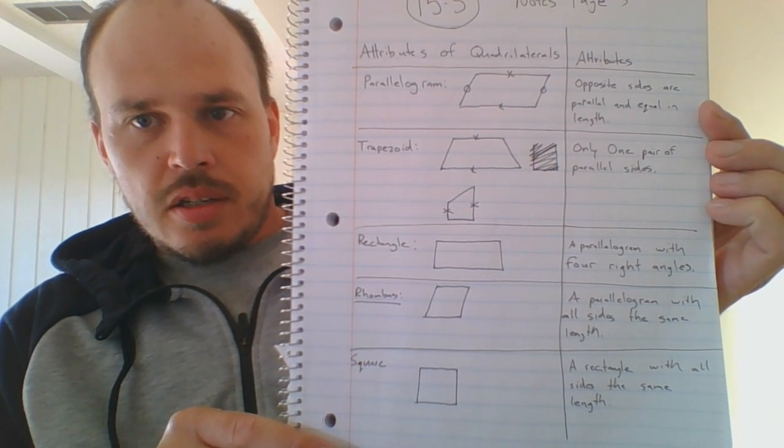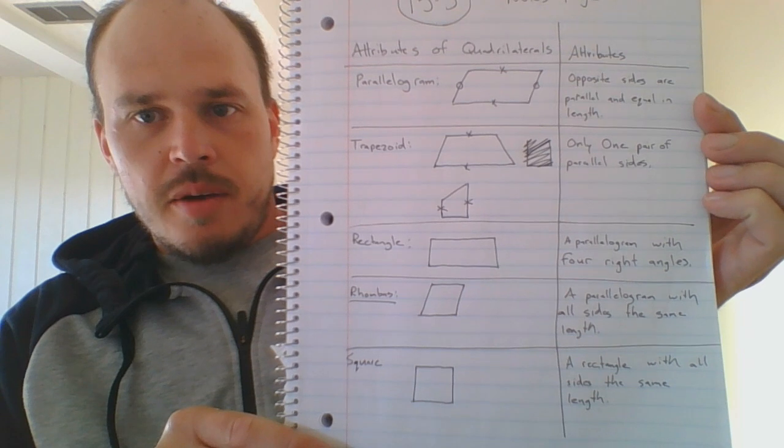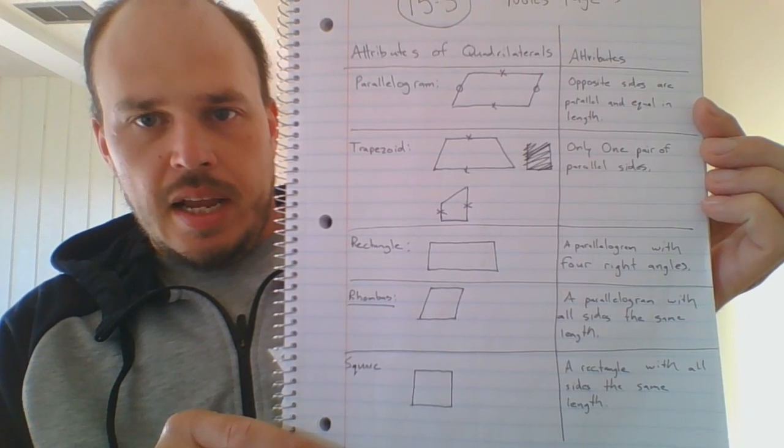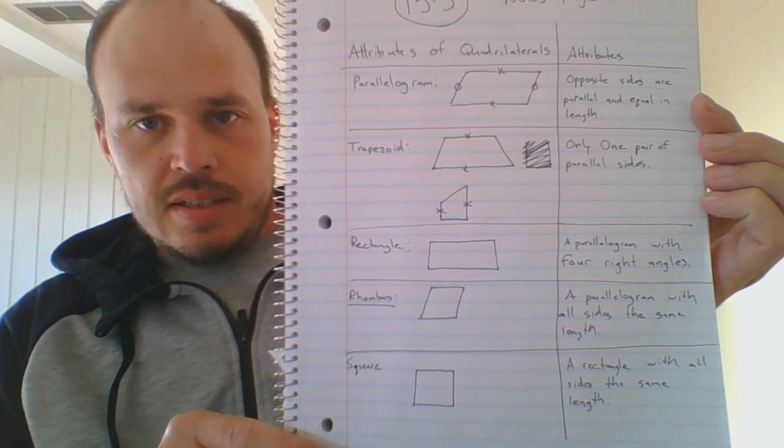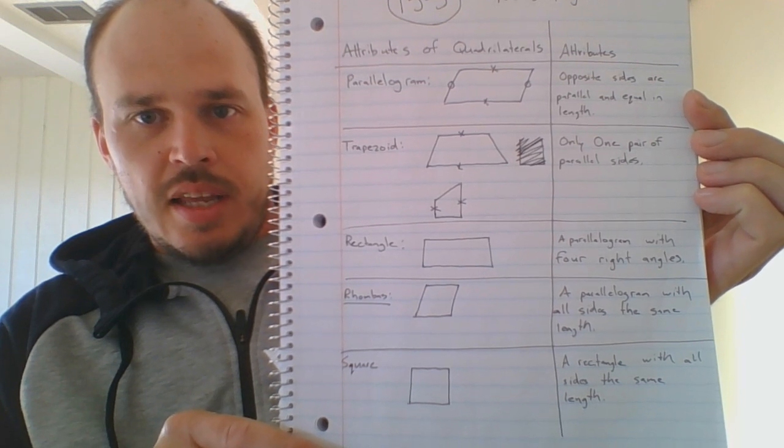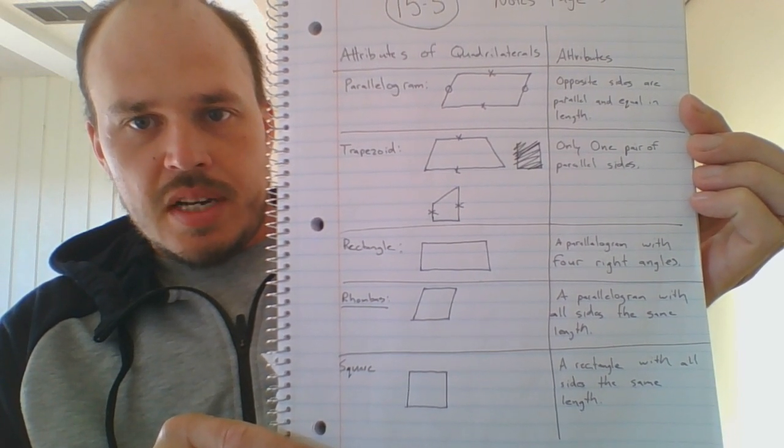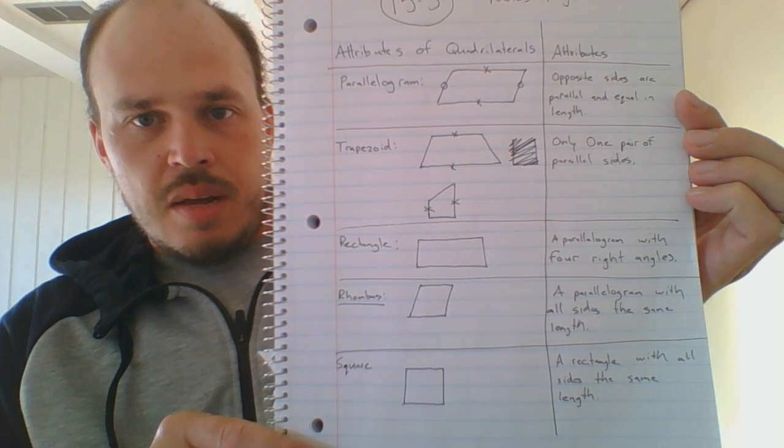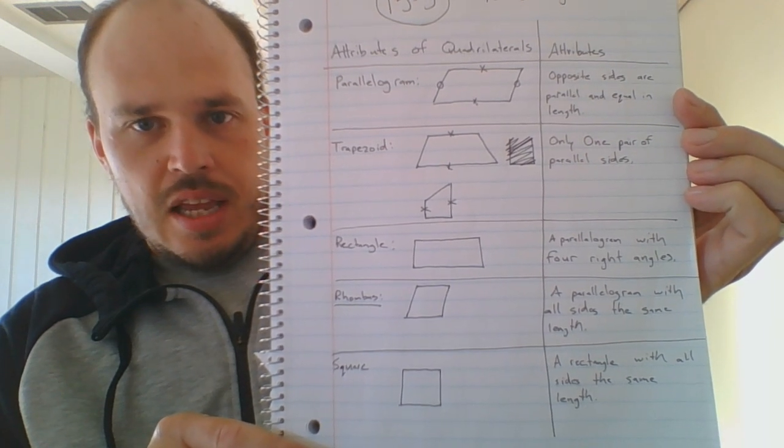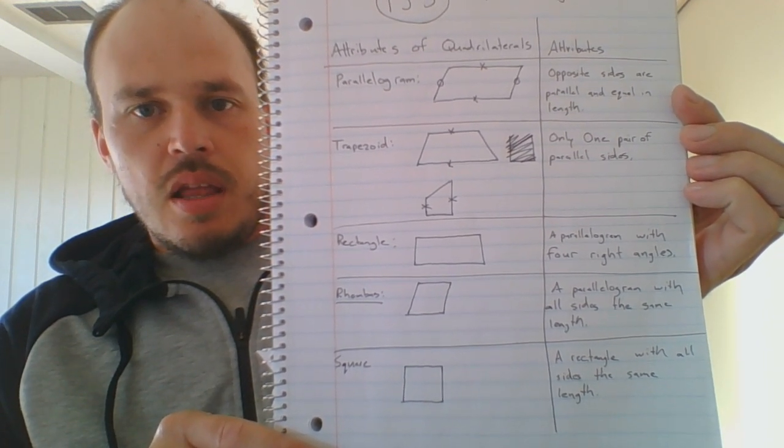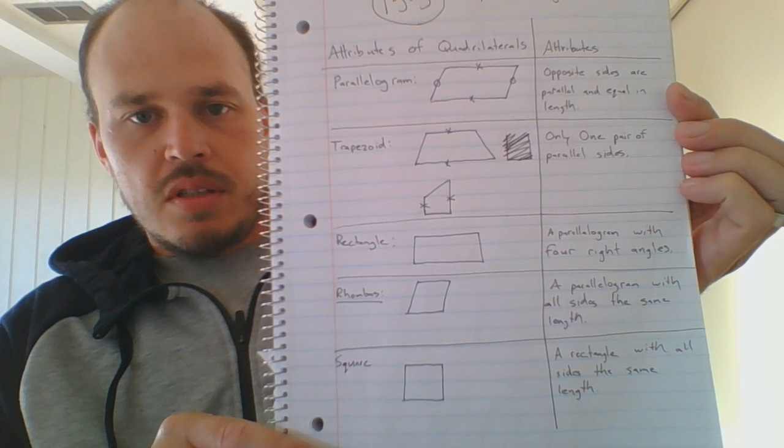So on top, you have a parallelogram. Opposite sides are parallel and equal in length. So you see how the x's, that line is equal in length, and they're parallel. Parallel means they would never cross. The lines that I marked with the o's, they are equal in length, and they are parallel. They'll never intersect. Intersect means crossing.